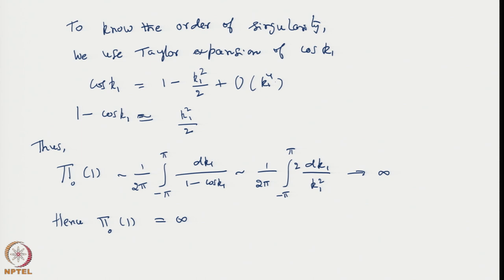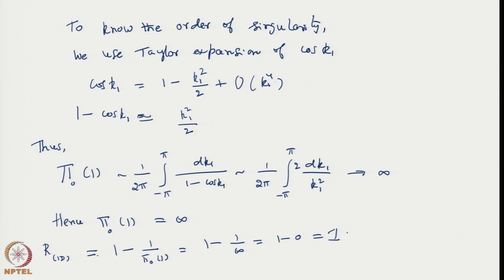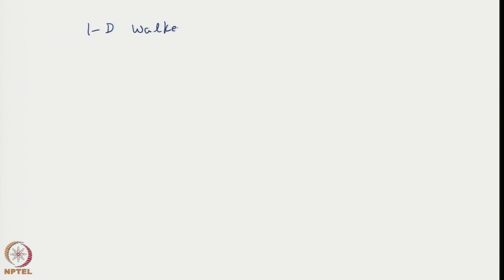Hence π₀(1) diverges — π₀(1) equals infinity — because it is essentially an integral of a quantity which has a strong singularity at the origin. As a result, R in 1D, the ultimate return probability, equals 1 minus 1/π₀(1) = 1 minus 1/∞ = 1 minus 0 = unity.